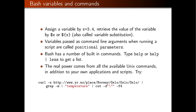In Bash you don't need to declare a variable before you use it — you can just write 'x=3.4' and Bash will have a new variable called x. You can retrieve the value of that variable using the dollar sign: '$x', or the alternative syntax '${x}'. This is what I showed in the Hello World example where we retrieved the value of variable x and outputted it.